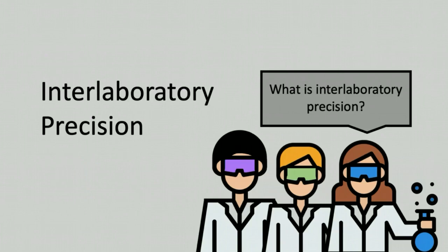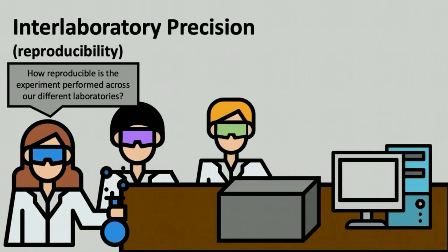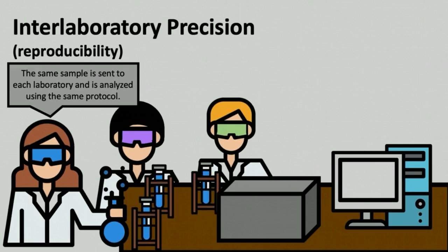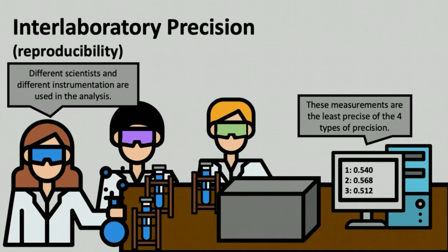The final type of precision is interlaboratory precision. Experiment protocols are often shared across multiple laboratories, so interlaboratory precision answers the question of how reproducible is the experiment when it is performed by different laboratories. To accomplish this, aliquots of the same sample are sent to each laboratory and the same protocol is used by each to analyze the samples. However, the samples are analyzed on different days, by different scientists, and the end results are measured by different instruments. This is often the least precise of the four types covered in this video, but having a small interlaboratory precision is especially important for companies with multiple quality control laboratories, since they need to be sure the results are the same no matter which laboratory is doing the testing.